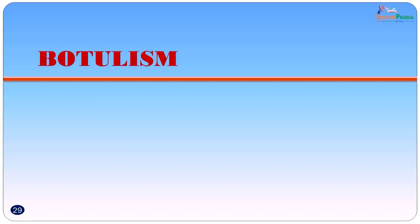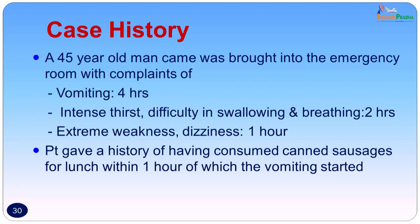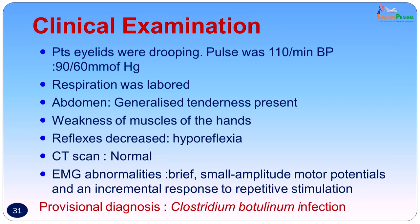Now let us go on to the next organism — botulism. A 45-year-old man was brought into the emergency room with complaints of vomiting from 4 hours, intense thirst, difficulty in swallowing and breathing of 2 hours duration, and extreme weakness and dizziness for the last 1 hour. The patient gave a history of having consumed canned sausages for lunch, within 1 hour of which the vomiting had started. Patient eyelids were drooping, pulse was 110 per minute, BP was 90 by 60 mmHg, respiration was labored, abdominal examination revealed generalized tenderness, weakness of the muscles of the hand was noticed, and hyporeflexia was noted. A CT scan was normal; EMG of the hand showed brief small-amplitude motor potentials and incremental response to repetitive stimuli, giving a provisional diagnosis suggestive of Clostridium botulinum infection.